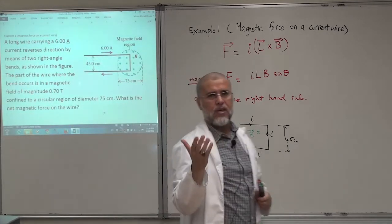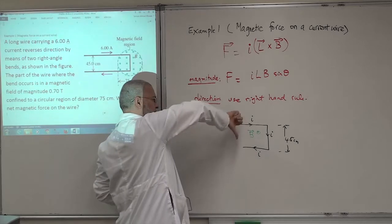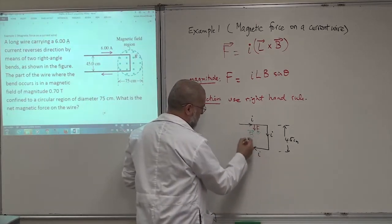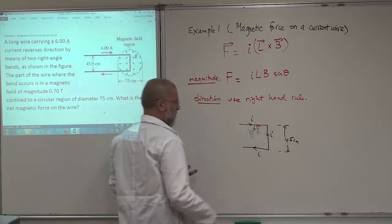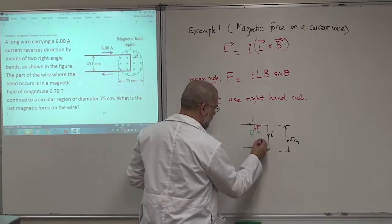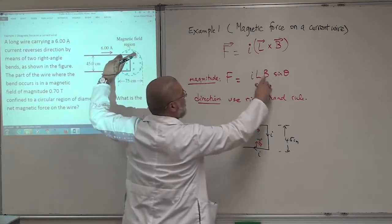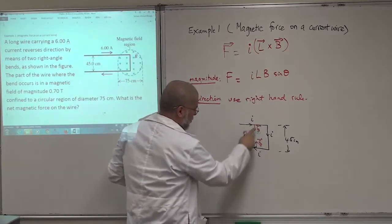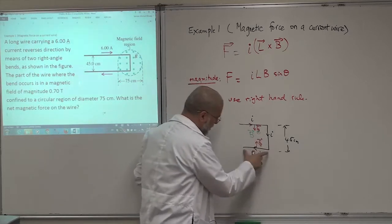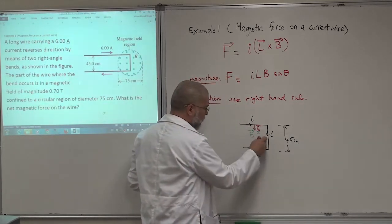Can you tell me the direction of the magnetic force on only this part? Use the right-hand rule — it's a cross product. Your fingers are with the current, and the magnetic field is coming out. I cross B gives the force downward on the bottom wire and upward on the top wire. These two forces are exactly equal because the length is the same, the same B, and same current. So these two forces cancel each other.